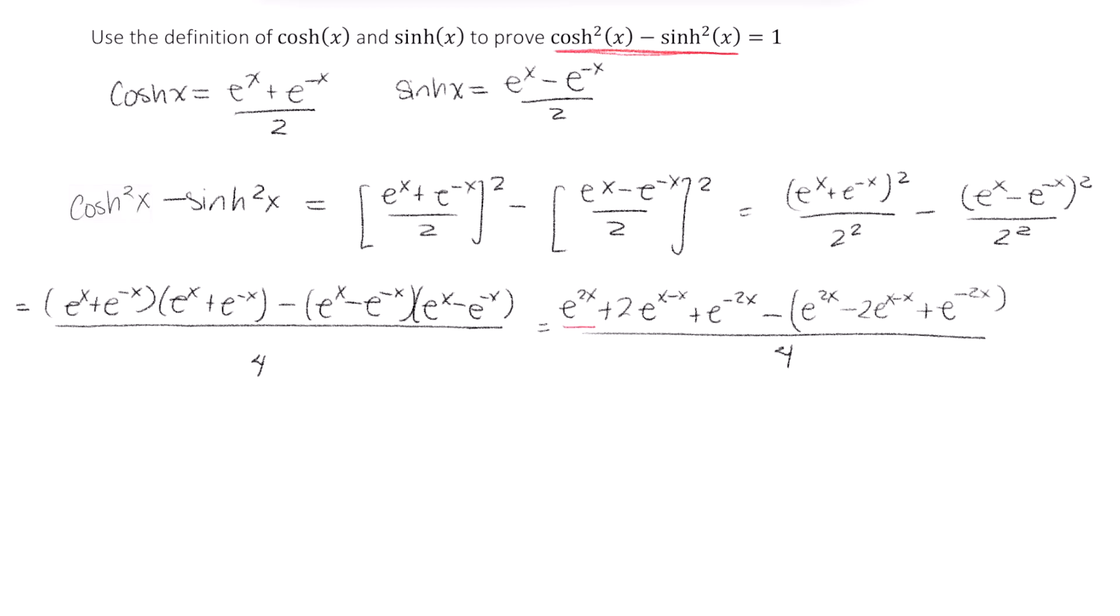All right, you should have what's up on your screen. So take a look at the top right corner. E to the x minus x is e to the 0, which is equal to 1, and I'll use that when I continue to simplify.